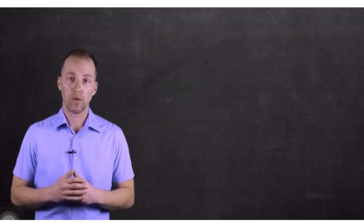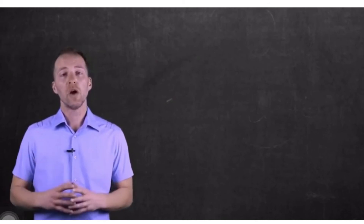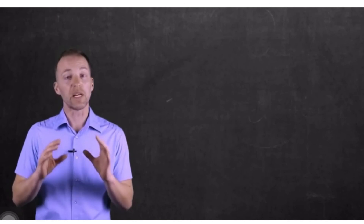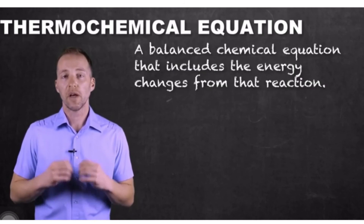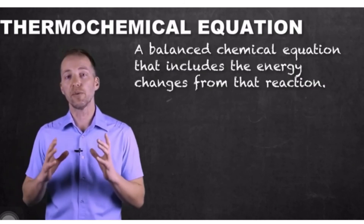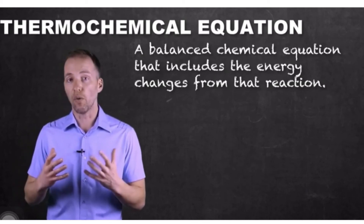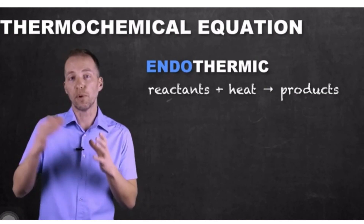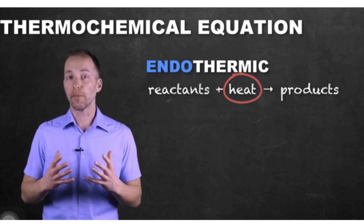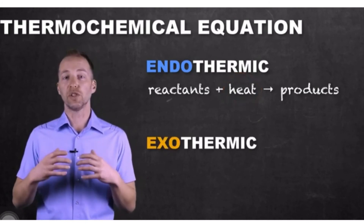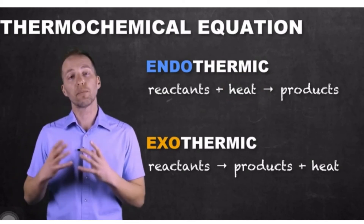Just as we use balanced chemical equations to represent how reactants form products and in what ratios, we now include energy or heat into these balanced equations as thermochemical equations. One way is to include energy within the equation itself: for an endothermic process, energy appears on the reactant side; for an exothermic reaction, energy appears on the product side.